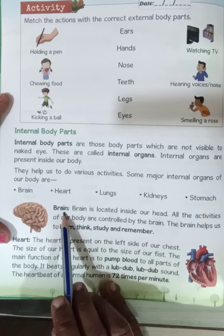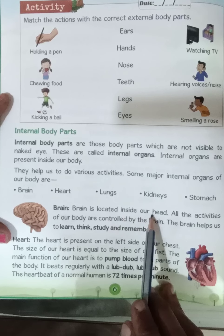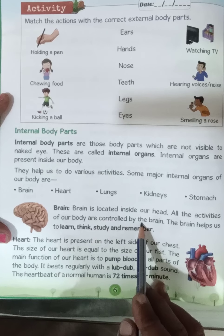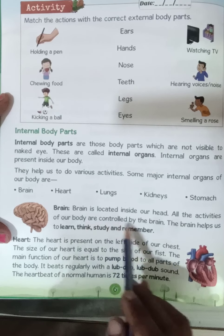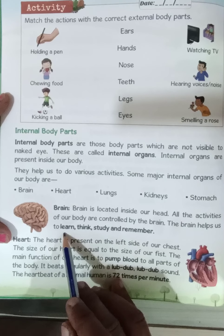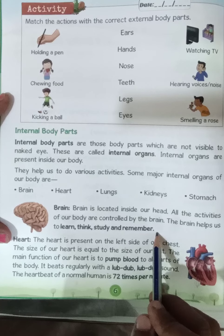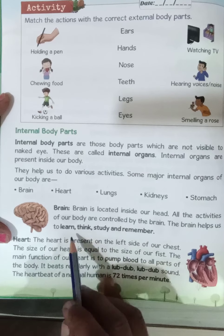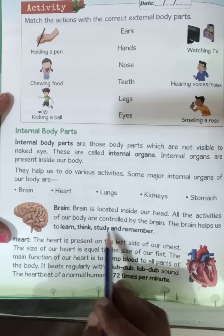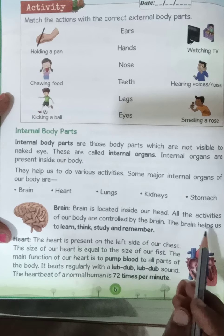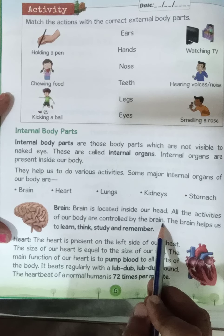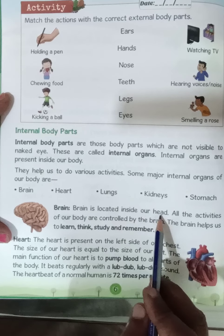Let's come to the brain. The brain is located inside our head. All the activities of our body are controlled by our brain. The brain helps us to learn, think, study and remember. So the function of our brain is that we can learn, think, study and remember, and all body activities are controlled by our brain.